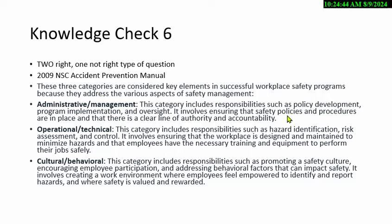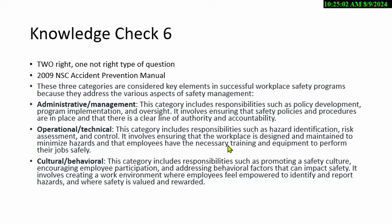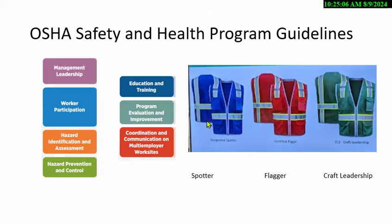Administrative means policy development. Operational/technical means hazard identification, risk assessment, and control. Cultural/behavioral means promoting a safety culture and participation. OSHA's seven points are more realistic and you should know them: management leadership and commitment, worker participation, identify hazards and conduct assessments, implement controls, education and training, evaluate your program and continually improve, and coordinate contractors. There's a 2015 guideline that preceded a 1989 guideline that will help on these questions.